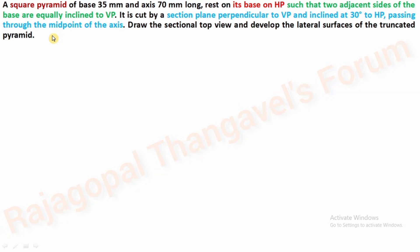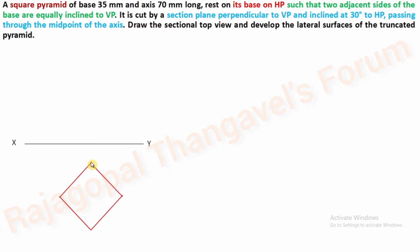First we have to identify the top and front view of the solid. As the square pyramid base is on HP, our top view will be a square. Two adjacent sides of the base must be equally inclined to VP. Start with XY — you can see these two adjacent sides are equally inclined to VP like a diamond, and make sure our square side is 35 mm.